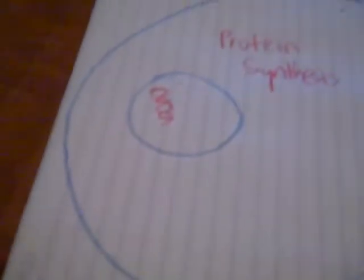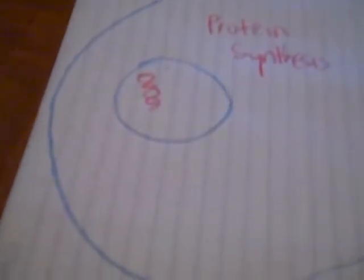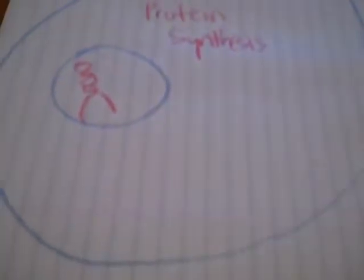What happens first is — remember, DNA doesn't want to leave this cell because that's its hood. So it opens up and they make an RNA copy, just one strand, because we need that message. We call this first process transcription — you write the script.